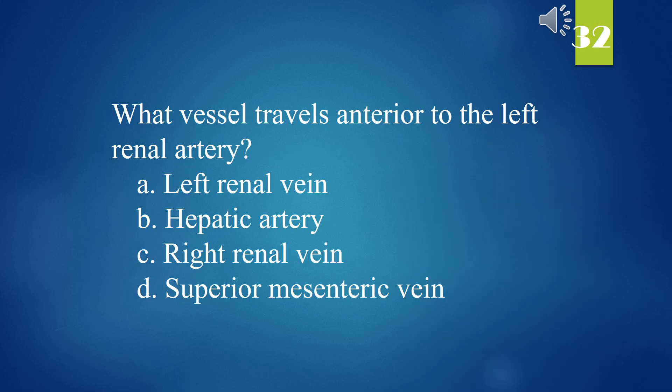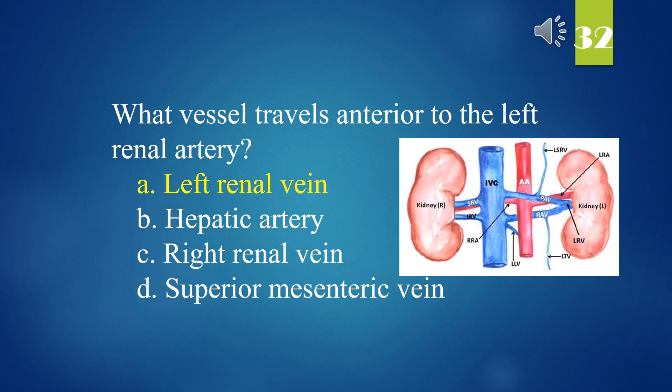What vessel travels anterior to the left renal artery? A. Left renal vein. B. Hepatic artery. C. Right renal vein. D. Superior mesenteric vein. The answer is A. Left renal vein.